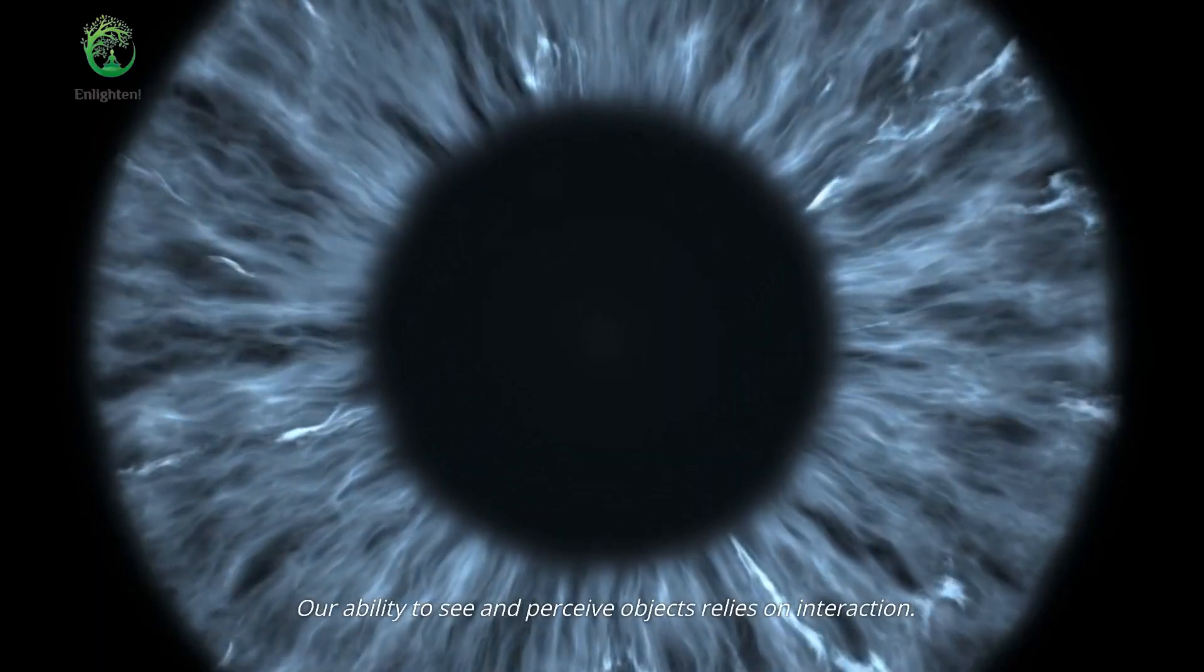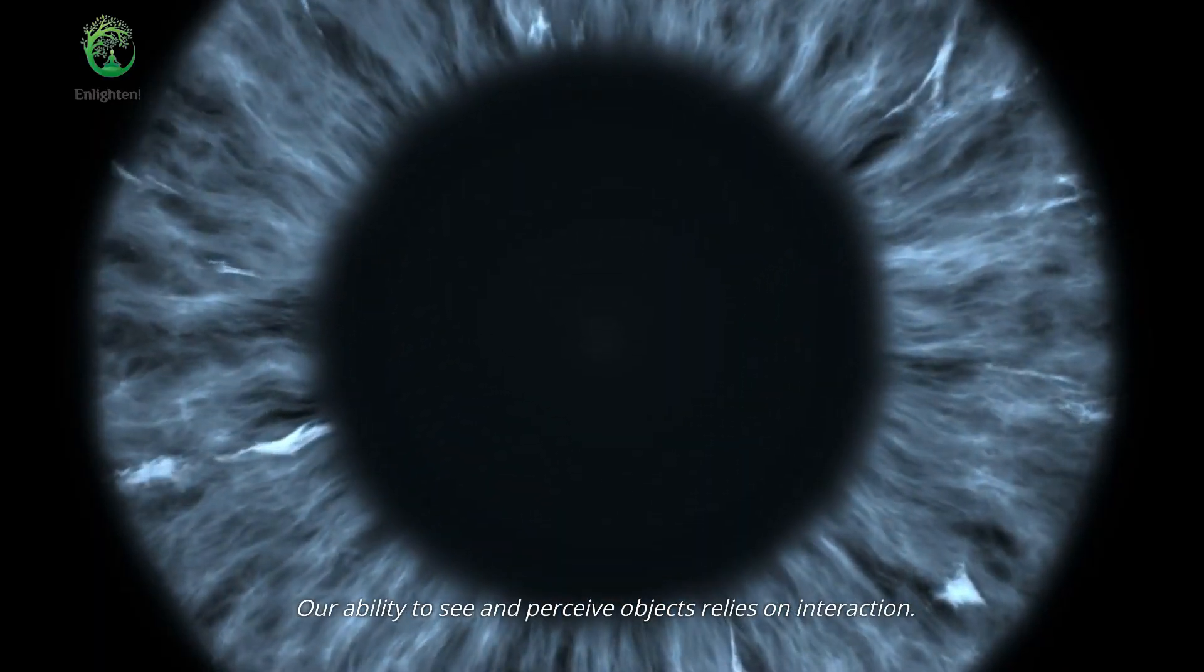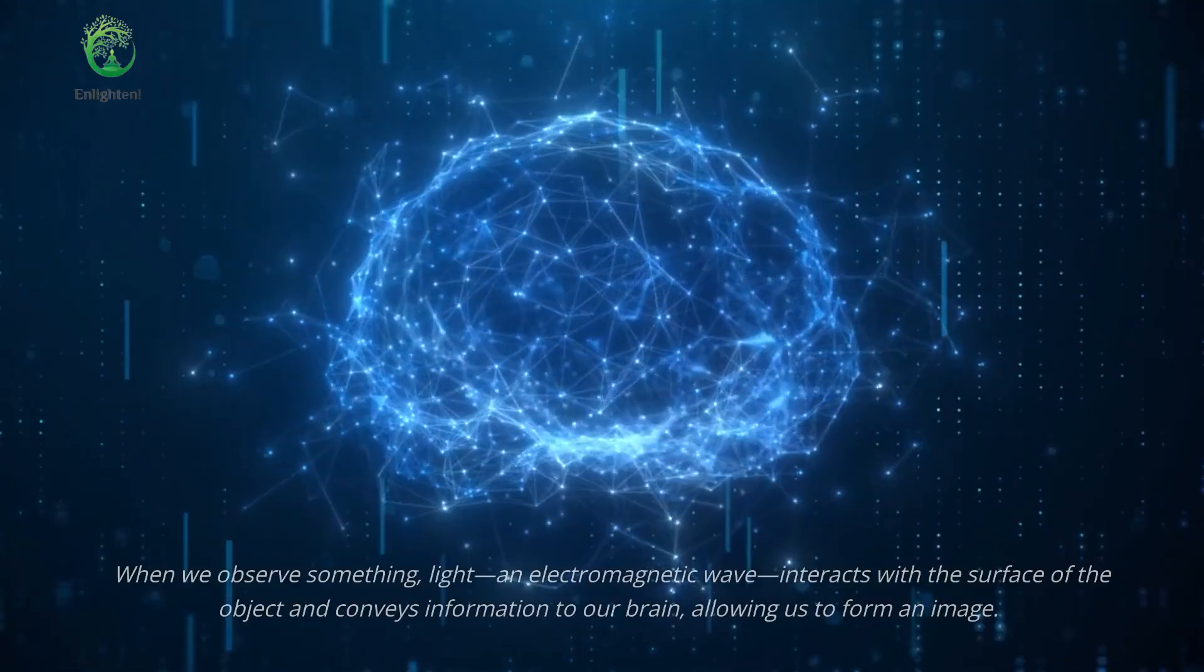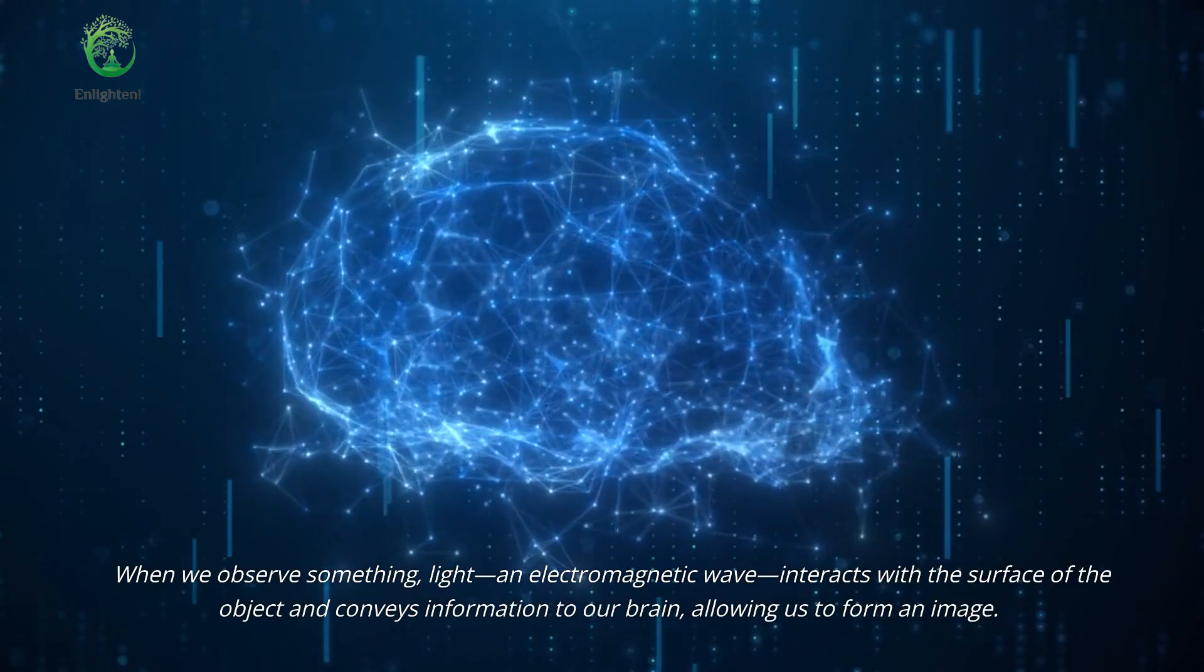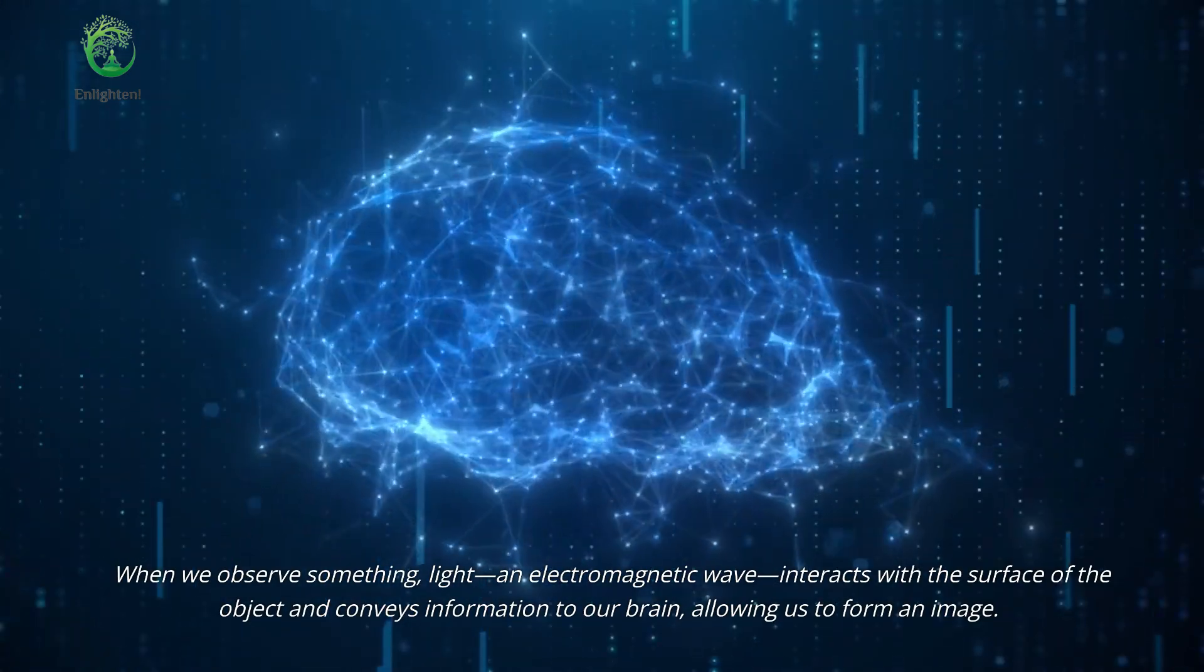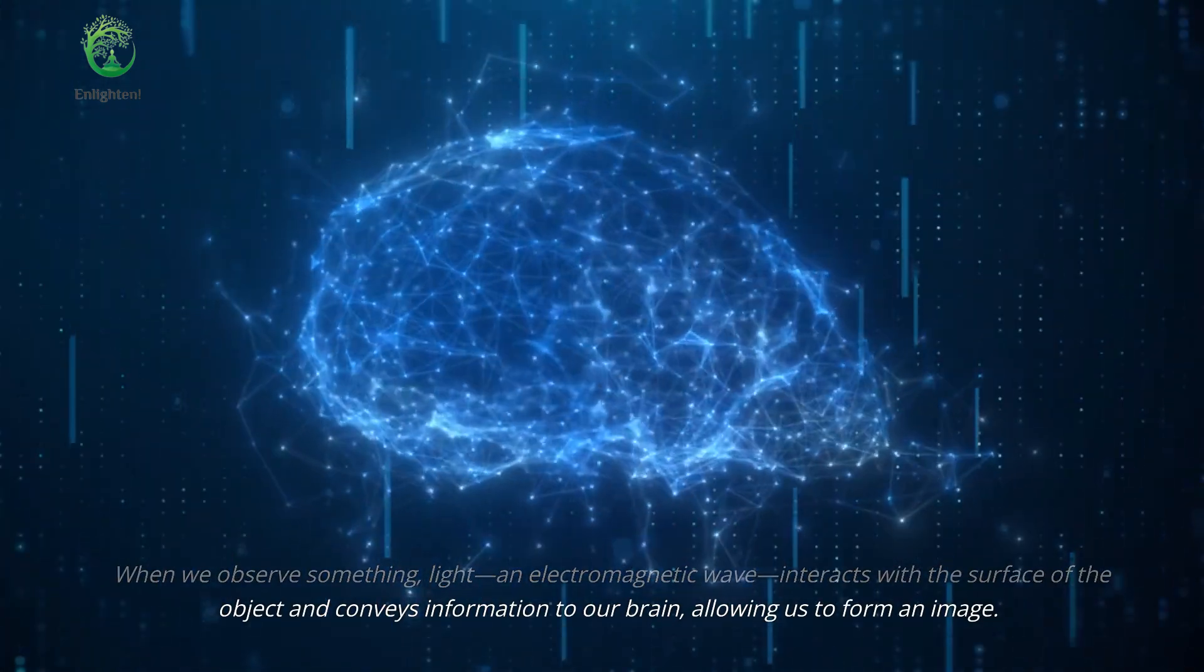Our ability to see and perceive objects relies on interaction. When we observe something, light, an electromagnetic wave, interacts with the surface of the object and conveys information to our brain, allowing us to form an image.